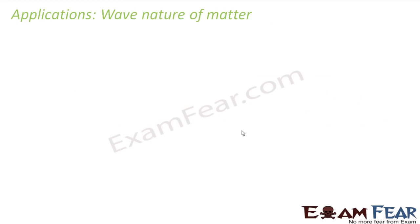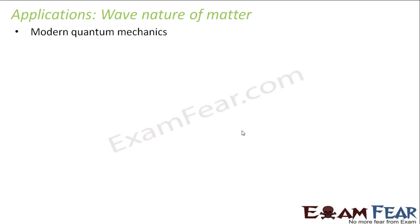The wave nature of matter also had very important applications, mostly in higher fields of study of physics, like modern quantum mechanics. Quantum mechanics is very different from classical mechanics, where you assume that mass is constant and you can clearly measure the position and velocity of an object. But classical mechanics is not reality — it is based on lots of assumptions. When you go into quantum mechanics, you actually see how things are in nature.